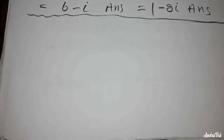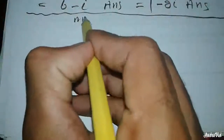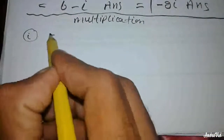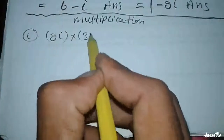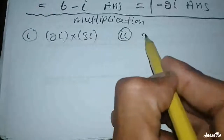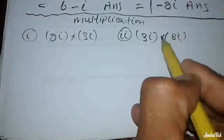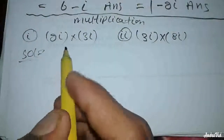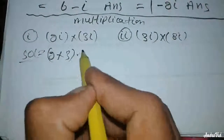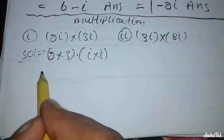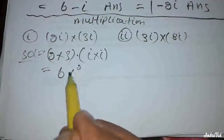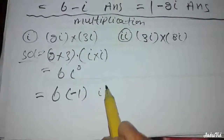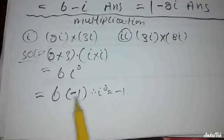Now multiplication of complex numbers. Example: multiply 3 iota and 8 iota. We multiply real by real and imaginary by imaginary. 2 cross 3 gives the real part, and iota times iota gives iota squared. Since iota squared equals minus 1, we substitute that value. So where iota squared appears, we replace it with minus 1.